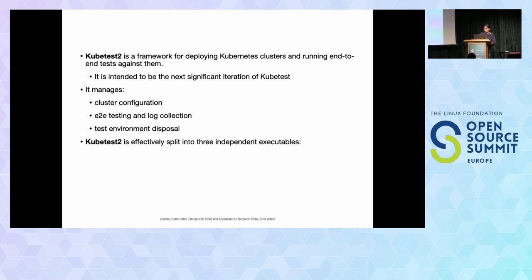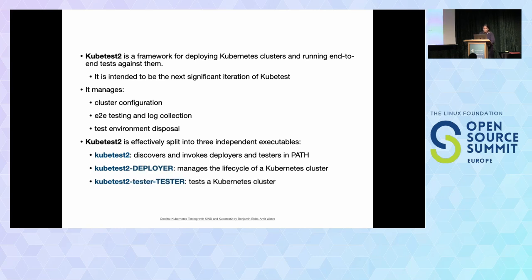kubetest2 uses a binary plugin mechanism for detecting plugin deployers and testers. This binary plugin mechanism is very widely used across the Kubernetes project — the canonical example being kubectl. There are three binaries in kubetest2 named in a standardized format: any binary named kubetest2-your-deployer-name is used as a deployer binary, any binary named kubetest2-tester-your-tester-name is used as a tester binary, and just kubetest2 is the framework binary that receives flags and arguments to discover and invoke deployers and testers in your system path.